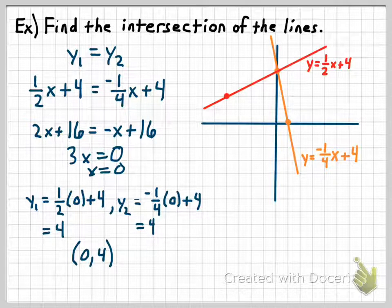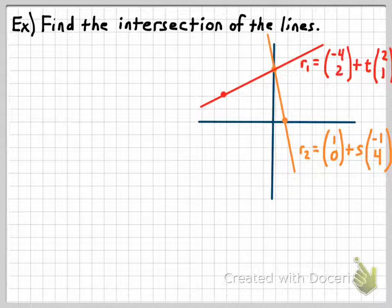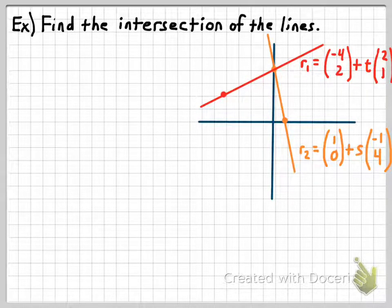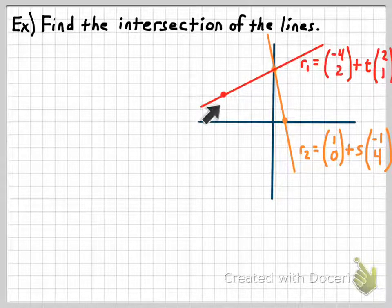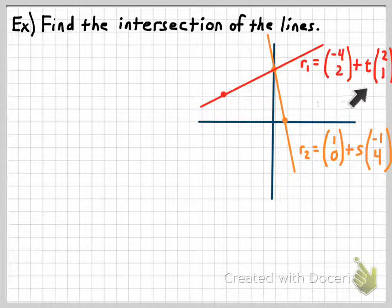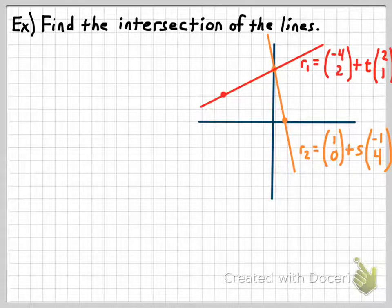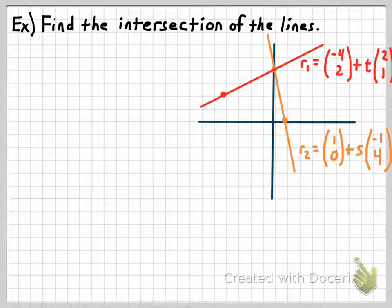What if these equations had been given to us in vector form instead of slope-intercept form? I've given you the exact same two lines, so we already know they intersect at the point (0, 4), but now in vector form. Remember, the way you make a vector equation is you pick an initial point and make a position vector out of it — so the point (negative 4, 2) — and then make the direction vector. This line goes right two units for every one unit up, so that's how I came up with that equation. Here I said the initial point was (1, 0) and the direction was (negative 1, 4). Just like with slope-intercept form, to determine if and where these lines intersect, I'm going to set the two equations equal to one another — set R1 equal to R2.